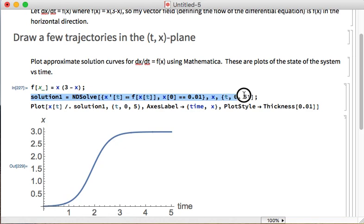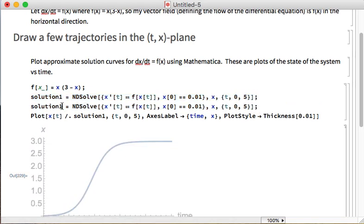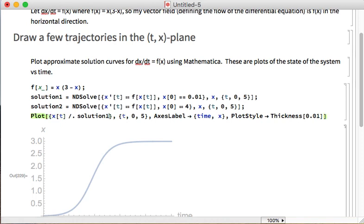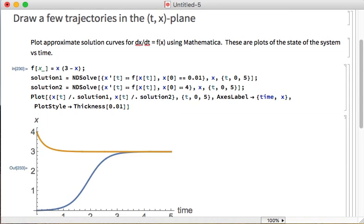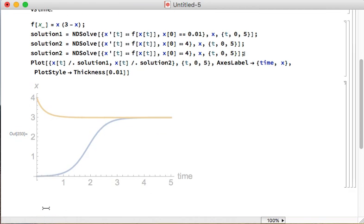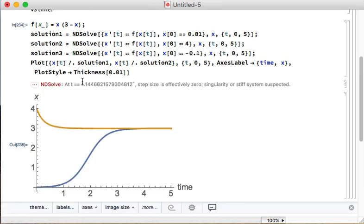Let me add some more. So let me start from a different initial condition. Maybe I'm going to start above the attracting fixed point, so I'll start up at 4. And if I want to plot two things at once, I put them in a list together, which happens using braces.